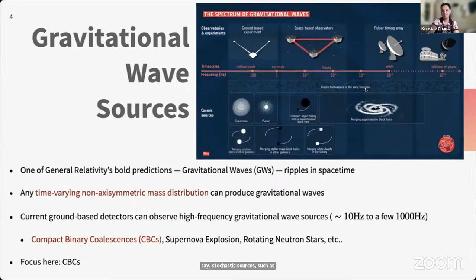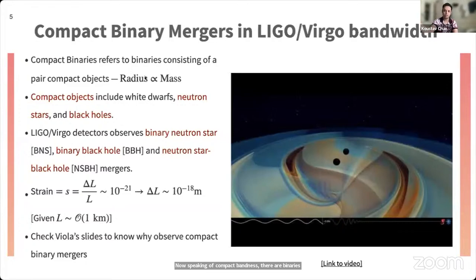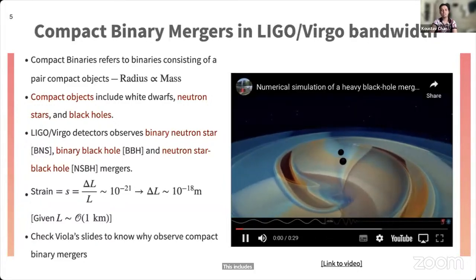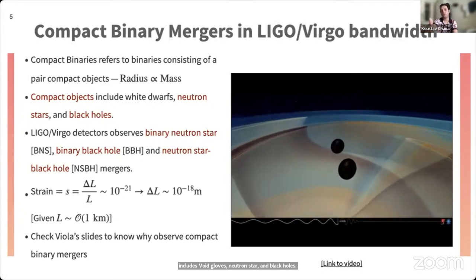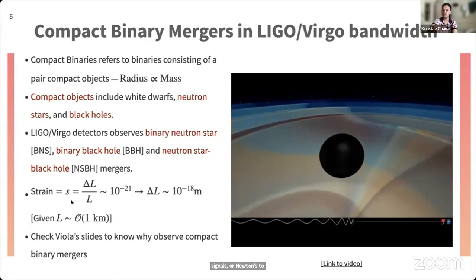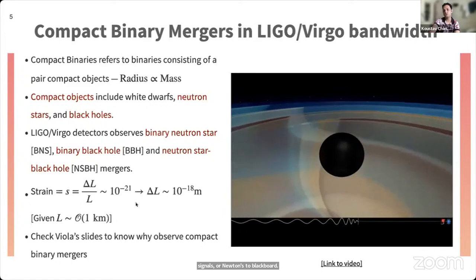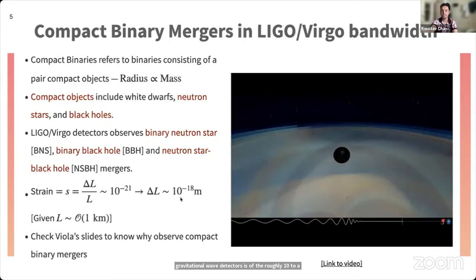The focus of this workshop is gravitational wave signals from compact binary mergers. Compact binaries consist of compact objects — astrophysical objects whose radius is roughly proportional to their mass — including white dwarfs, neutron stars, and black holes. Current generation LIGO-Virgo detectors observe binary black hole, binary neutron star, or neutron star–black hole signals, provided the strain induced on the detector is of order 10⁻²¹, corresponding to a length change of order 10⁻¹⁸ meters.